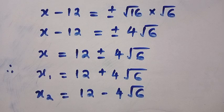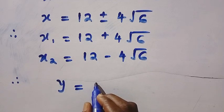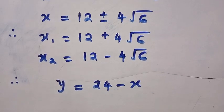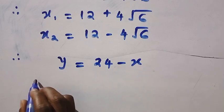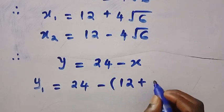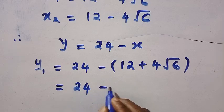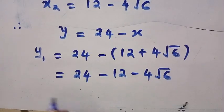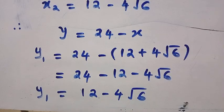To get the value of Y, we recall from equation 1 where we made Y the subject of the formula: Y equals 24 minus X. Starting with X₁ — if X₁ equals 12 plus 4 root 6, we substitute it in. We have Y₁ equals 24 minus (12 plus 4 root 6). Opening the bracket with negative: 24 minus 12 minus 4 root 6, which gives Y₁ equals 12 minus 4 root 6.